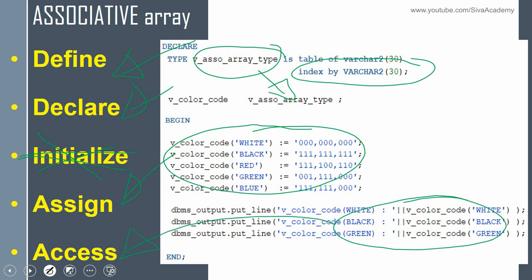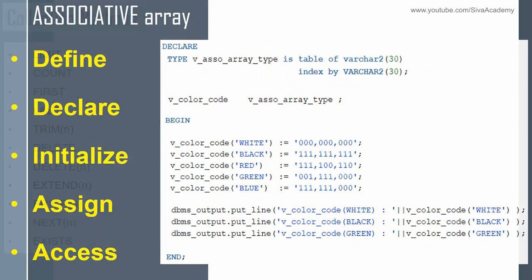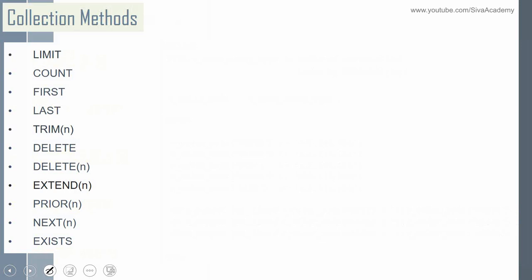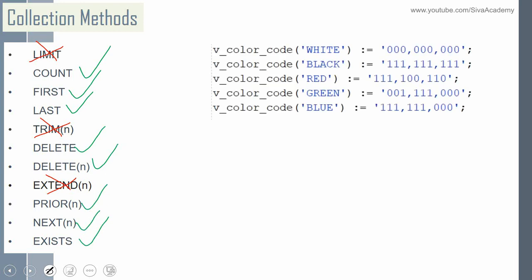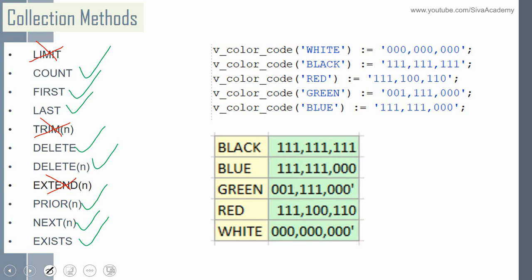Now let us see how to use functions with associative array variables. Here is the list of functions we saw for vArray and nested table, but there is a slight difference — a few functions are not applicable for associative array. For example, limit, trim, and extend functions are not applicable. The rest — count, first, last, delete, prior, next, and exists — are all applicable. Associative array will not preserve the order in which it is assigned; instead it sorts as per the key value. That's why the first function returns 'black' and the last function returns 'white'. This is another difference between associative array compared to vArray and nested table.